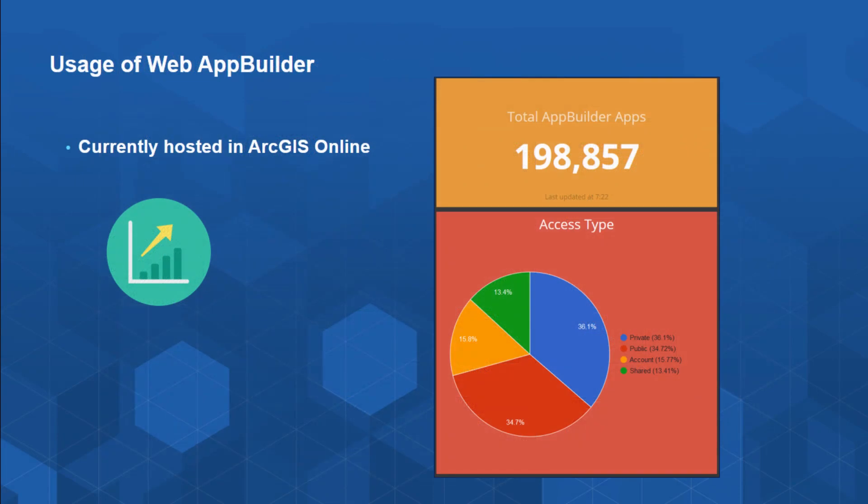The numbers don't lie. I took this screenshot this morning: how many apps are currently hosted in ArcGIS Online using Web App Builder? We're almost at 200,000. You can also see a pie chart showing which ones are public versus shared. What I showed you in the live sites group are the 70-plus customers that have allowed us to reference their site — but I'm always looking for more. If you have a site you've built and it's publicly shared, please let me know so I can promote it.